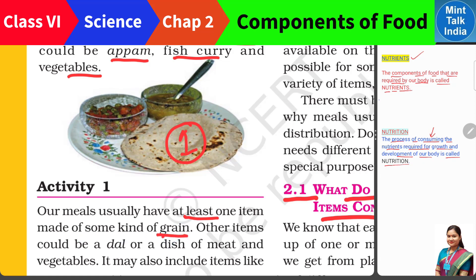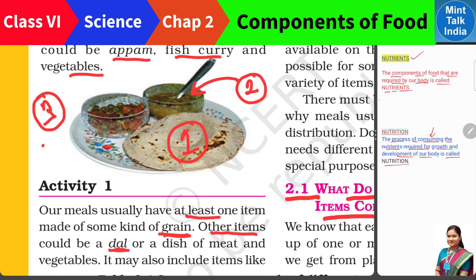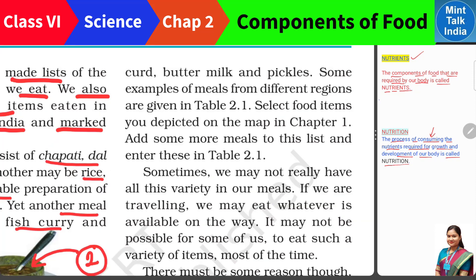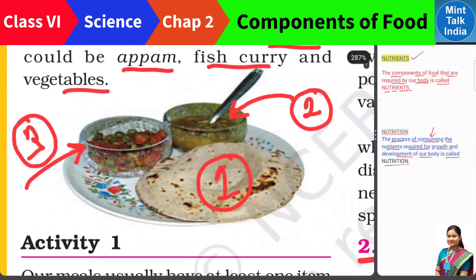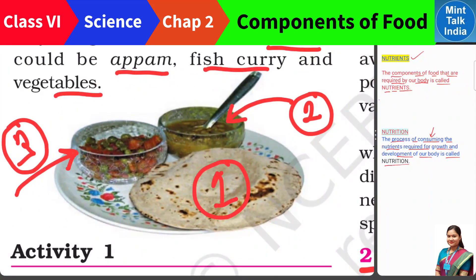Humare khaane mein ek item woh rehta hai jo grain se bana hota hai. Our meal will usually have at least one item which is made up of some kind of grain — jaise is case mein wheat grain se bani roti hai. Uske baad humare plate mein doosri item dal hogi. Aur humare plate mein tisri item bhi hamesha rehti hai — woh hai tareh ki sabzi. Agar aap vegetarian hain, ya non-vegetarian hain toh log meat fish khaana prefer karte hain. Iske alawa bahut saare log doodh, dahi, chhaach, achar in sab ko bhi khaate hain — dairy products. Aur dairy products ke alawa bahut saare log salad bhi khaate hain.